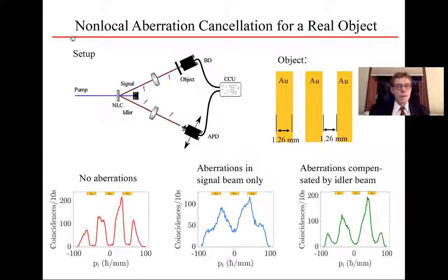Now what about a real image, a real object? Can we put a real object in one arm and put aberrations and get back the image of this object? So we chose a very simple object. This is three gold bars on top of a substrate. This would block out light in three different places. Now when there's no aberrations at all, here's our coincidence count. And you see that it drops to zero here and here and here.